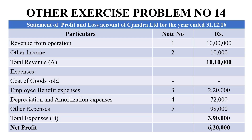Now for the format: Working Note 1 — revenue from operations is Rs. 10 lakhs. Working Note 2 — other income is Rs. 10,000. Total revenue is Rs. 10,10,000. Expenses: cost of goods sold covers gross profit, opening stock, closing stock, and purchases. Employee benefit expenses (Working Note 3) = Rs. 3,20,000. Depreciation and amortization (Working Note 4) = Rs. 72,000. Other expenses (Working Note 5) = Rs. 98,000. Total expenses = Rs. 3,90,000. Net profit = Rs. 6,20,000.